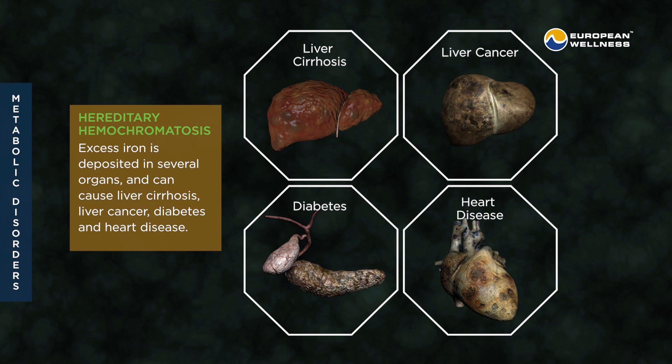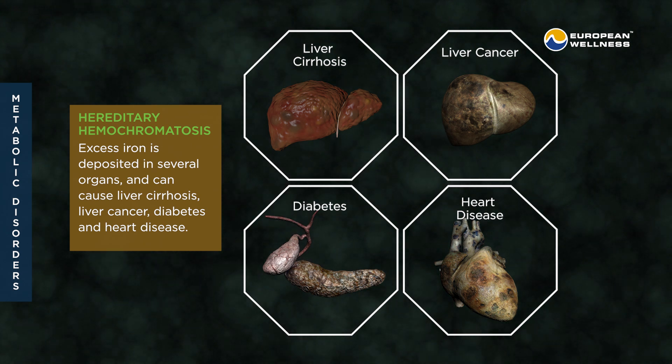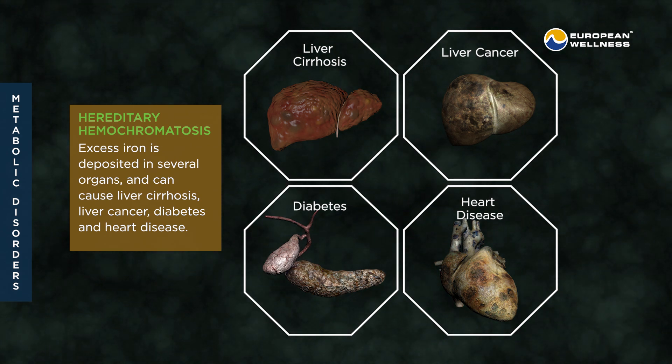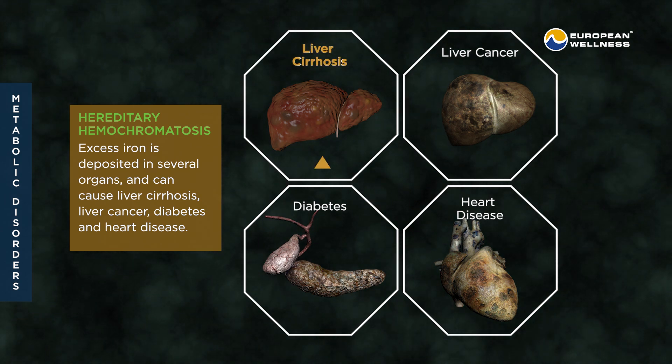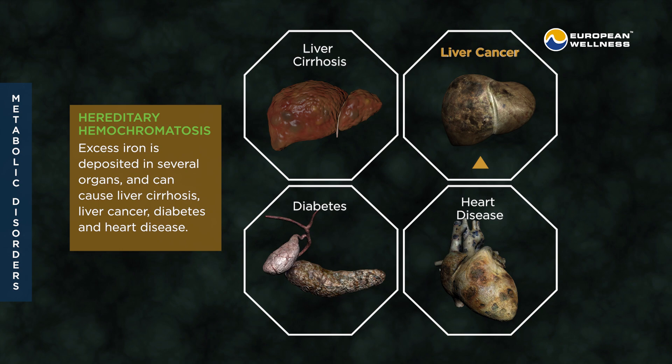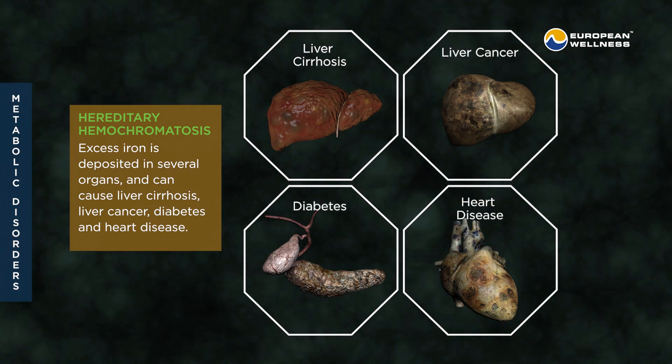Hereditary hemochromatosis: excess iron is deposited in several organs and can cause liver cirrhosis, liver cancer, diabetes, and heart disease.